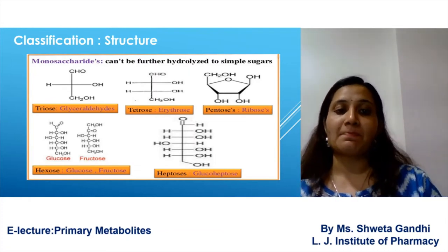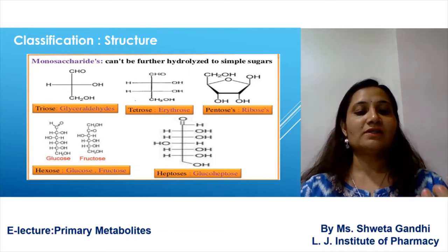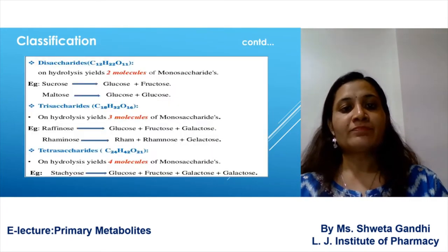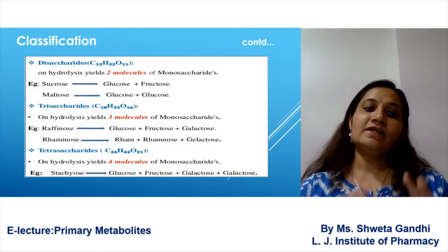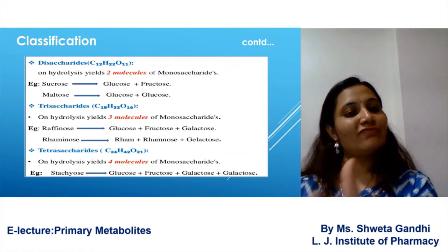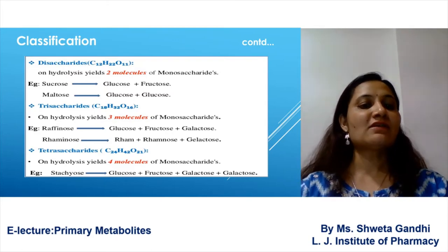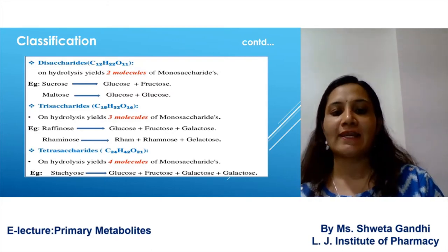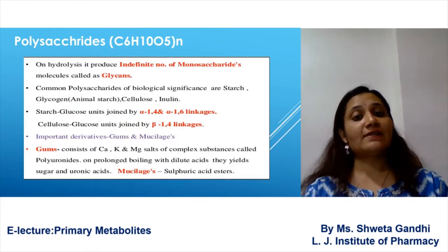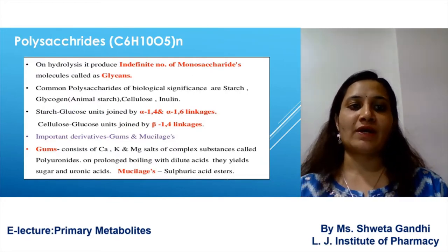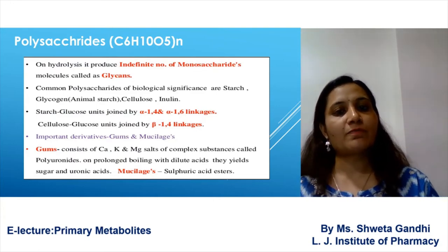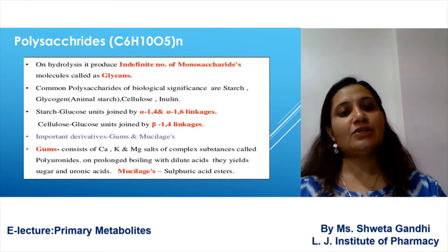Examples of each class: monosaccharides include glucose and fructose; disaccharides include sucrose; oligosaccharides include raffinose; and polysaccharides include starch. Monosaccharides cannot be further hydrolyzed into simpler sugars. Disaccharides yield two molecules on hydrolysis — sucrose gives glucose and fructose. Trisaccharides yield three molecules — raffinose gives glucose, fructose, and galactose. Polysaccharides yield an infinite number of monosaccharide units on hydrolysis; their formula is (C₆H₁₀O₅)n.